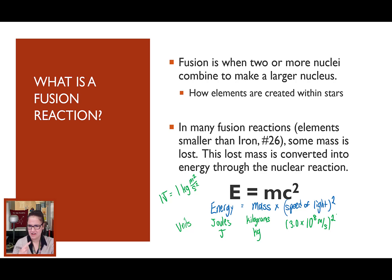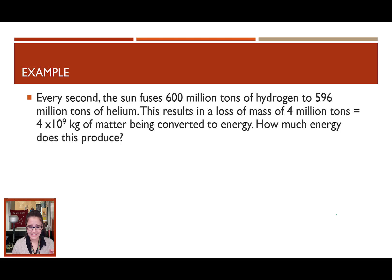So, let's go and see how much of this mass is lost in fusion. Every second, the sun fuses 6 million tons of hydrogen into about 596 million tons of helium. So, that's a loss of mass of about 4 times 10 to the 9th, or 4 billion kilograms of matter being converted into energy. How much energy? Well, we know our mass. It is 4 times 10 to the 9th kilograms. And we are looking for how much energy.